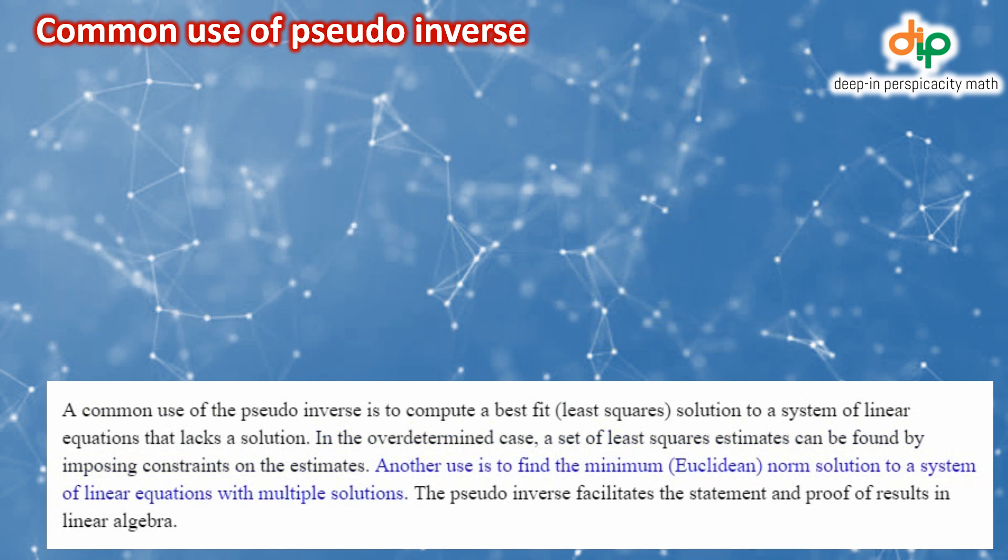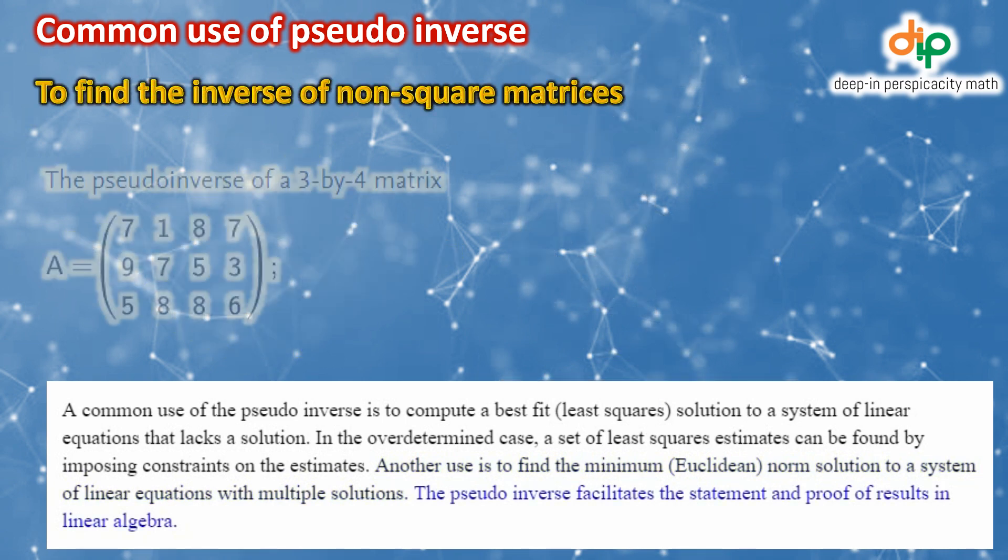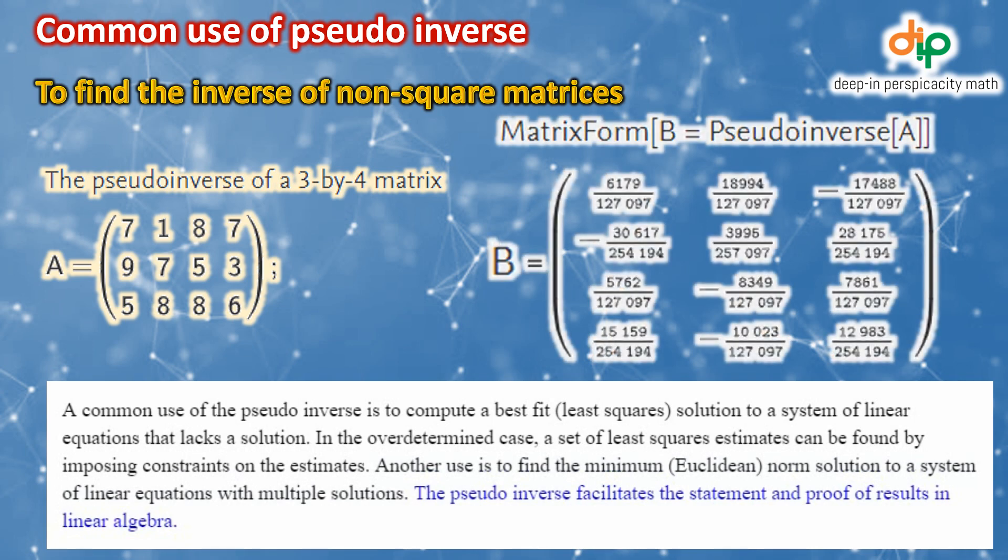Another use is to find the minimum Euclidean norm solution to a system of linear equations with multiple solutions. The pseudoinverse facilitates the statement and proof of results in linear algebra.